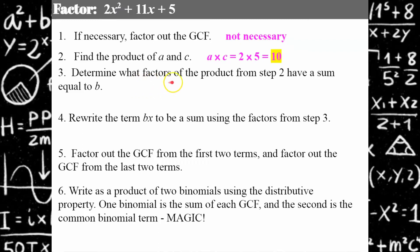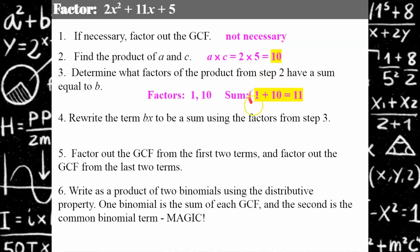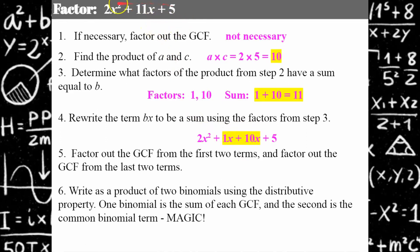Step three: determine what factors of 10 when added have a sum equal to B. What factors of 10 have a sum of 11? Factors 1 and 10: 1 times 10 is 10, and 1 plus 10 is 11 — so it works. Step four: rewrite that BX term. The BX term is positive 11x, so the magic here is 1 plus 10. I'm going to change that to 1x plus 10x. This expression is equivalent to the original trinomial — if I combine these like terms, I have not changed the value.